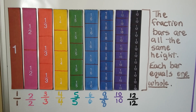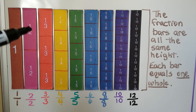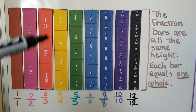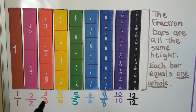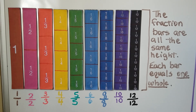Each bar equals one whole. As we said in the previous video, here we have a half and a half together — that equals one whole. We have a third, a third, a third — that equals one whole, that's three thirds. Do you see what's happening here, how the numerators and denominators are the same? Well, when they're the same, we know it's equal to one whole.